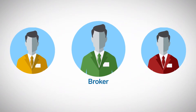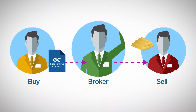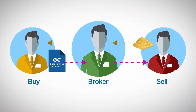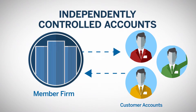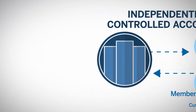A third party can facilitate the trade if they can demonstrate that the related position portion of the trade was passed through to the customer who received the exchange contract as part of the EFRP. Generally, EFRP transactions must be traded between accounts with different beneficial ownership. Failure to meet this requirement could mean the trade constitutes an illegal wash trade.